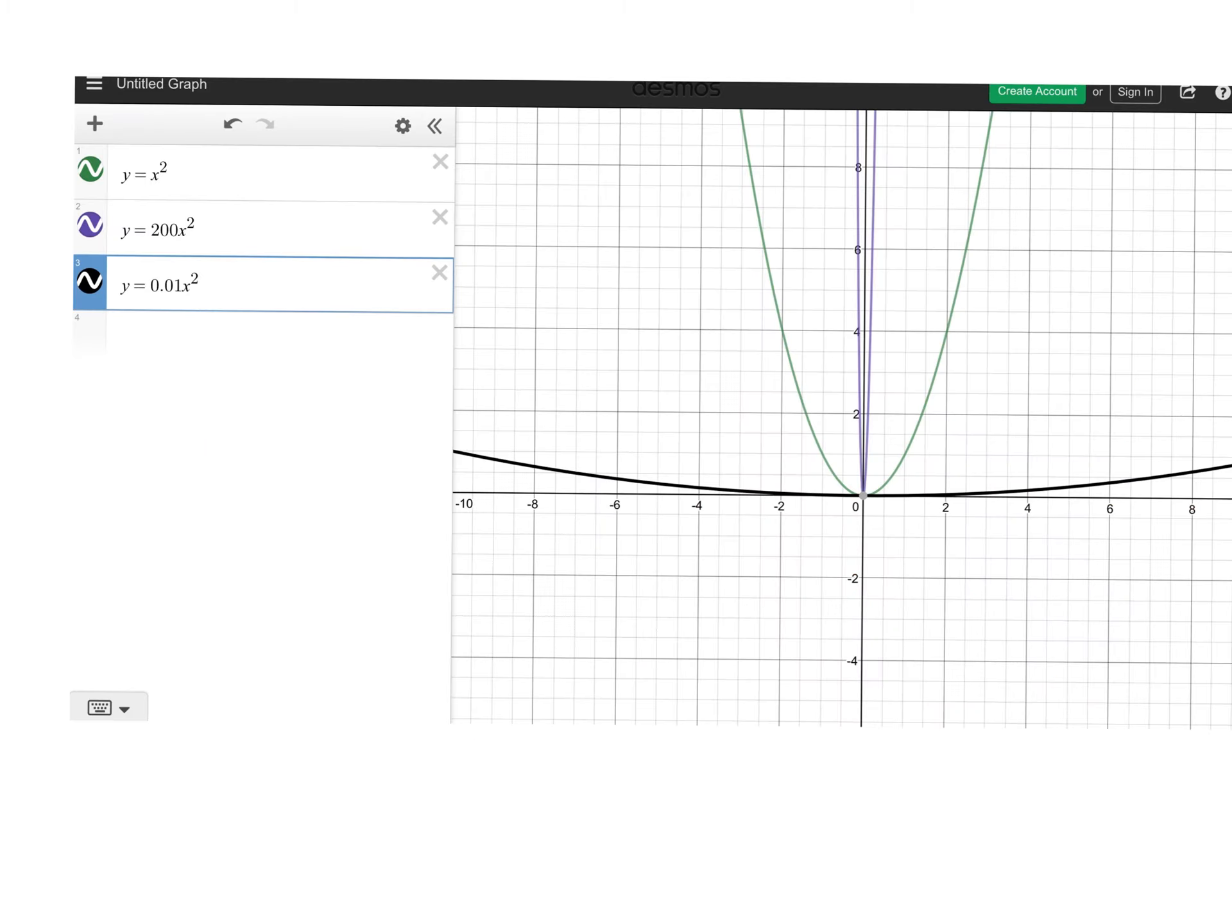If you look here, the green one is called the parent function. Y equals x-squared. When we're talking about if it's skinnier or wider, we're always comparing it to the original one. So we came up with a number that was larger than one. You guys said 200. I plugged it into the equation. And look at the parabola. Is it really skinny? Is it skinnier? Yes. It's way skinnier than the parent function. This is the parent function. And if it has a number greater than one, look at the parabola. It becomes way skinnier.